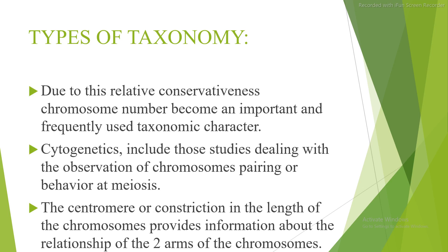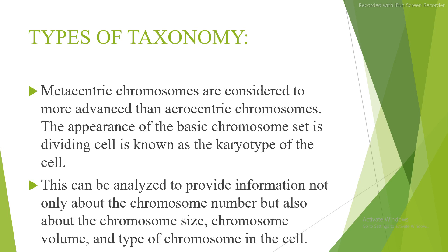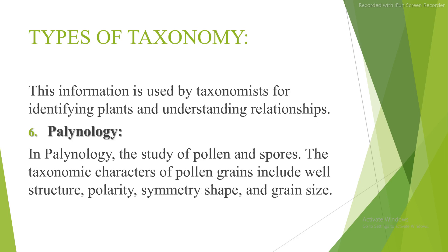Due to their relative conservativeness, chromosome numbers become an important and frequently used taxonomic character. Cytogenetics includes studies dealing with the observation of chromosome pairing or behavior at meiosis. The centromere constriction and the length of the chromosome provide information about the relationship of the two arms. Metacentric chromosomes are considered more advanced than acrocentric chromosomes. The appearance of the basic chromosome set in a dividing cell is known as the karyotype, which can be analyzed for chromosome number, size, volume, and type, used by taxonomists for identifying plants and understanding relationships.